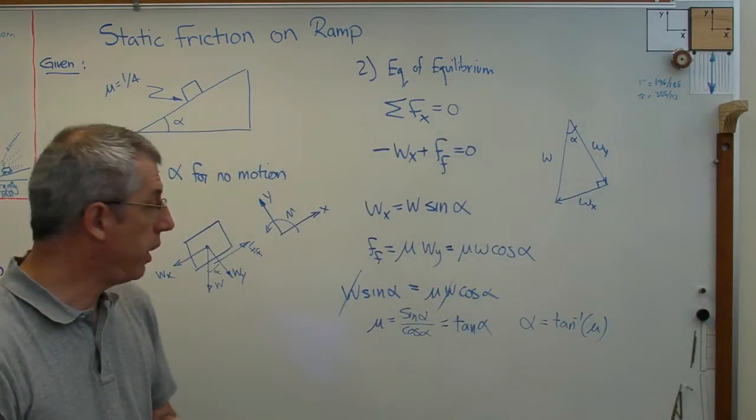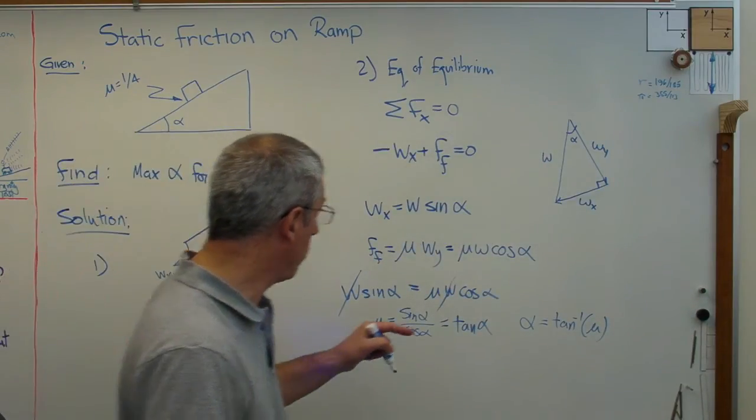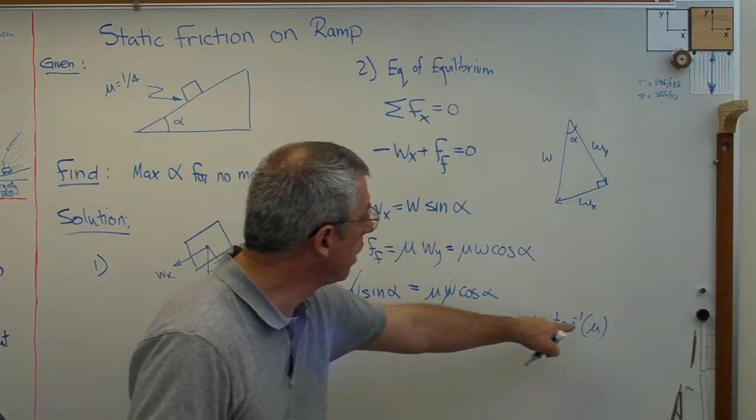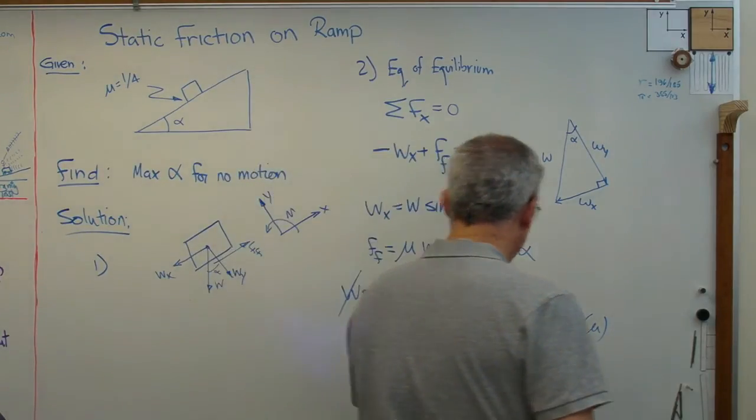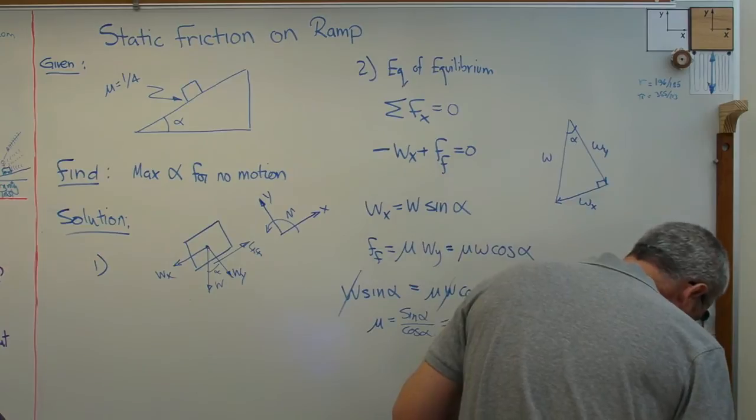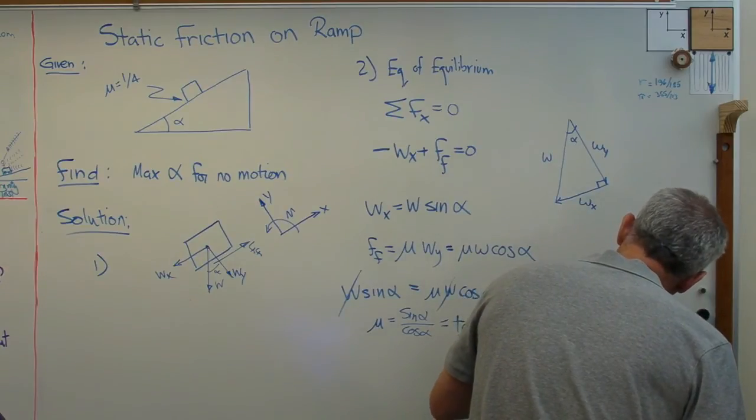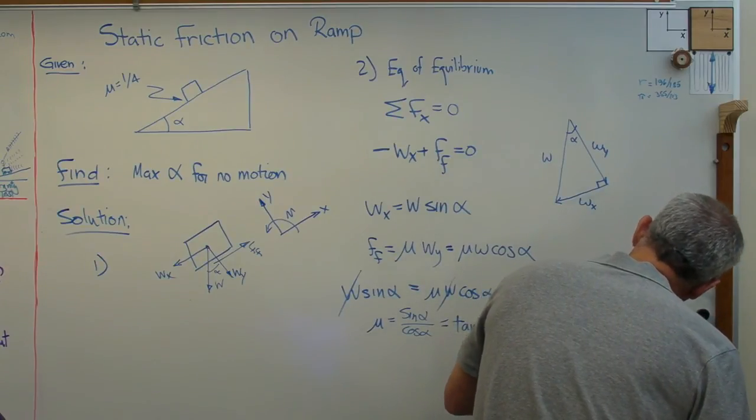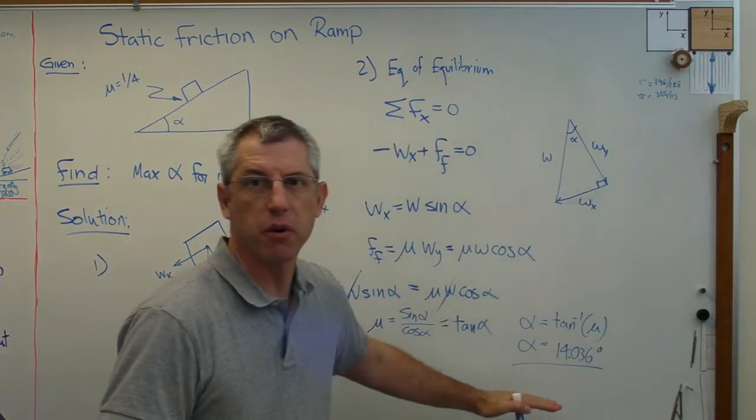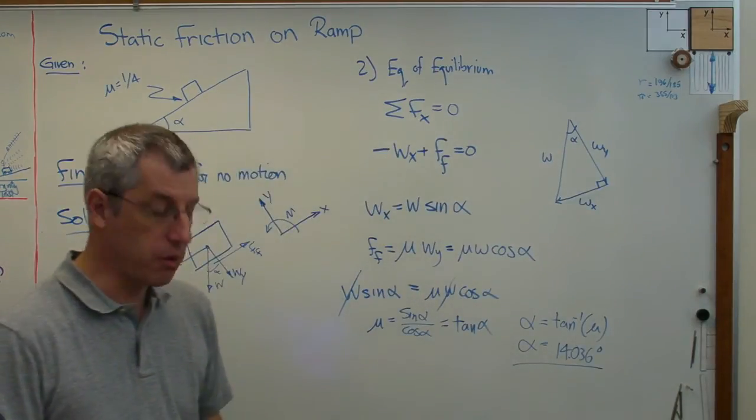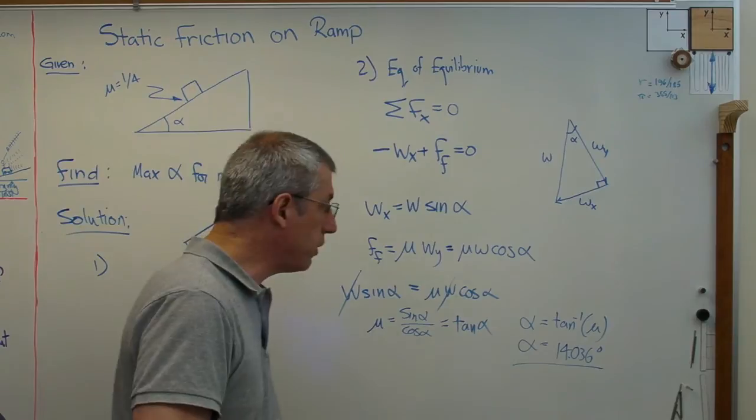Well, if mu equals tangent alpha, that means that alpha must equal the inverse tangent of mu. There you go. Well, let's do that. If we plug in one over four in for mu, alpha turns out to be, let me make sure I get this right, 14.036 degrees. Okay. I'm going to call that 14 degrees right there. So we're good to go. So we've got an answer, right? 14 degrees.